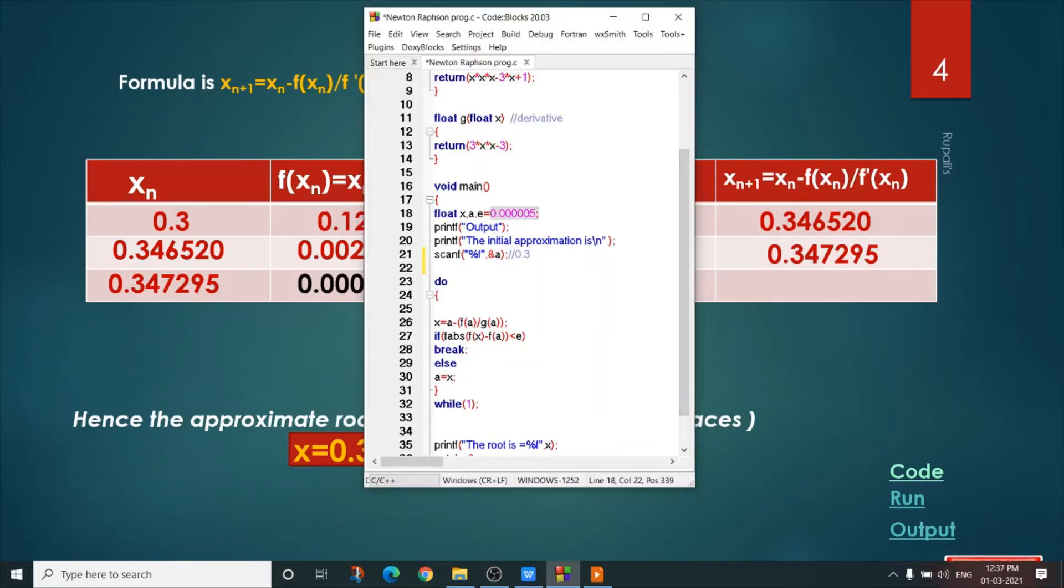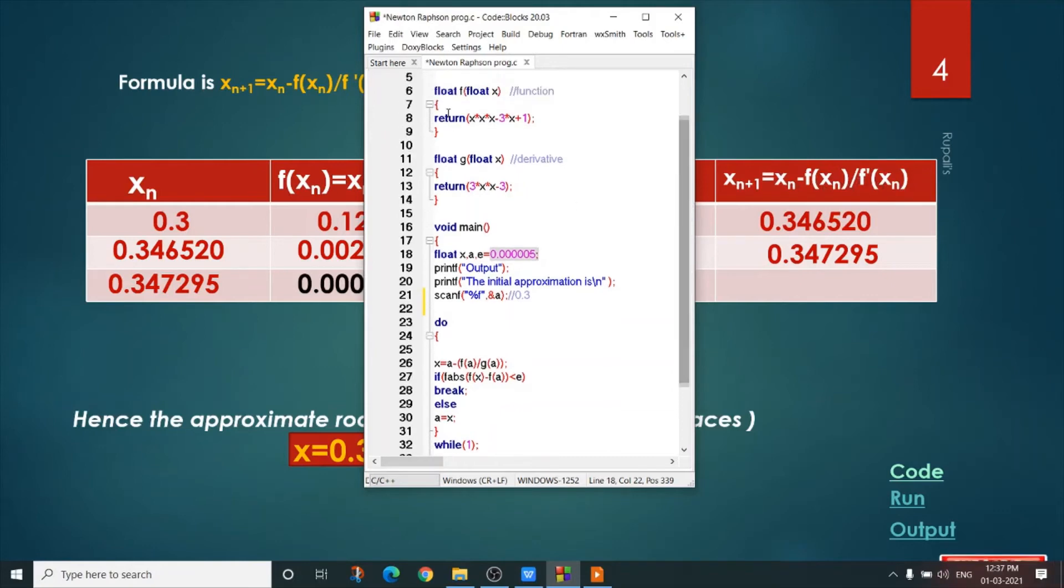I have to calculate xₙ₊₁. How I can calculate xₙ₊₁? Here it is x = xₙ, that is a, minus f(xₙ) divided by f'(xₙ). So here you have to call the function f by passing the value a, again divided by f'(xₙ). So here you have to call the function g by passing the value a. In this way, you calculate xₙ₊₁.